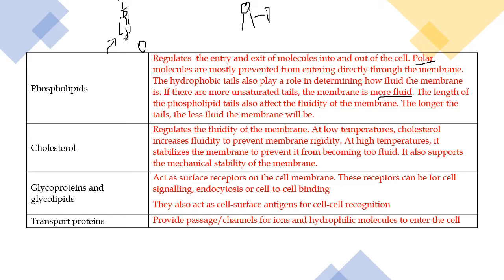Cholesterol regulates fluidity and plays a role at low temperatures to increase membrane fluidity. Think of the membrane like butter: if it's warm, butter melts; if it's cold, butter solidifies. Cholesterol ensures the membrane state is always optimal to allow the flow of materials in and out as needed.